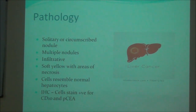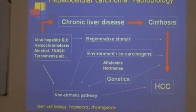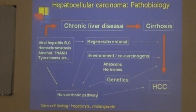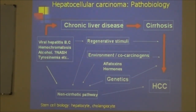On immunohistochemistry, hepatocellular carcinoma cells stain positive for CD10 and polyclonal carcinoembryonic antigen (pCEA). This slide shows the pathway leading towards the development of hepatocellular carcinoma. As you can see, the major pathway is through cirrhosis — patients develop cirrhosis because of a variety of causes including viral hepatitis, hemochromatosis, alcohol, or non-alcoholic steatohepatitis.